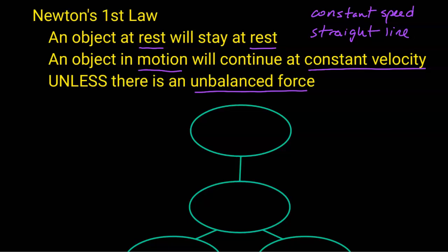So if an object is moving and there's no unbalanced forces, in other words the forces are balanced, the object will continue moving at constant velocity or it will continue at constant speed in a straight line.